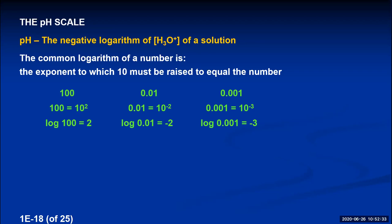To express how acidic a solution is, we write the hydronium concentration as 10 to a power, take the logarithm, then take the negative of that. So a solution with pH 2 has a hydronium concentration of 0.01 M, and pH 3 means 0.001 M. For numbers like 0.002 M, use your calculator — the log of 0.002 is −2.699, so the pH is positive 2.699.